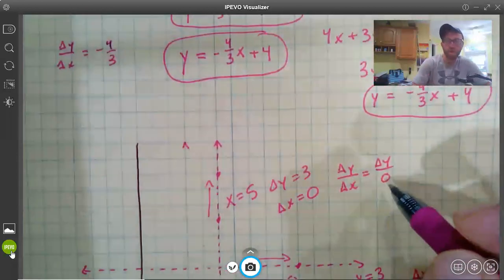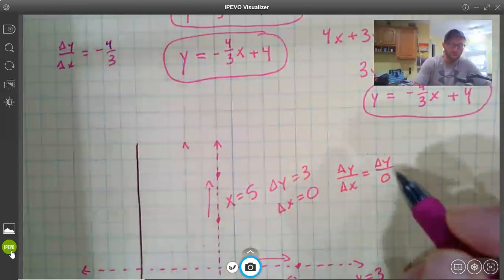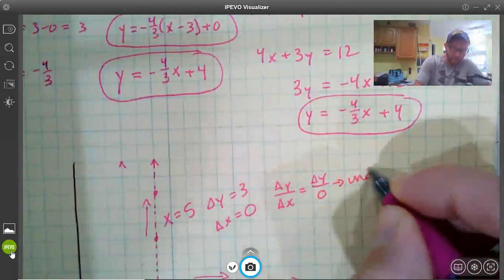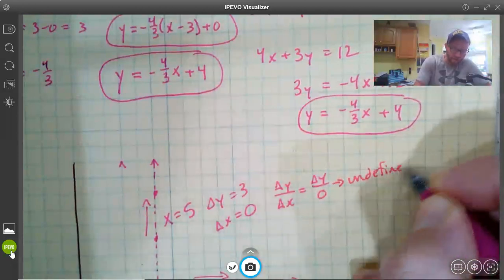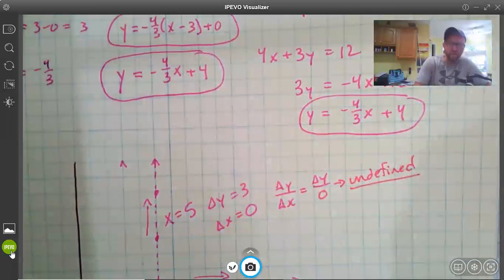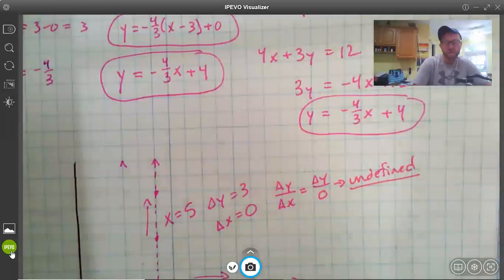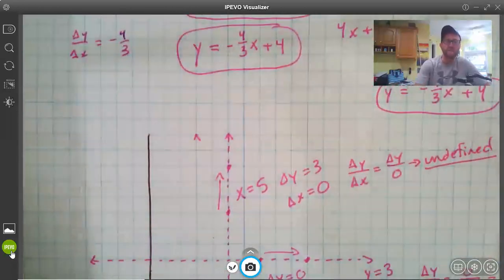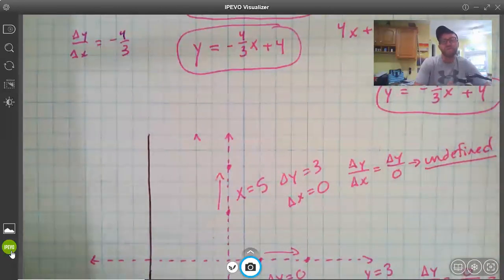Now the problem here, and you can take your calculator out, try punching in different numbers divided by 0, you always get undefined. Or your calculator might just give you some sort of an error message because division by 0 isn't allowed, it's just a mathematical no-no. So this line, we would say.